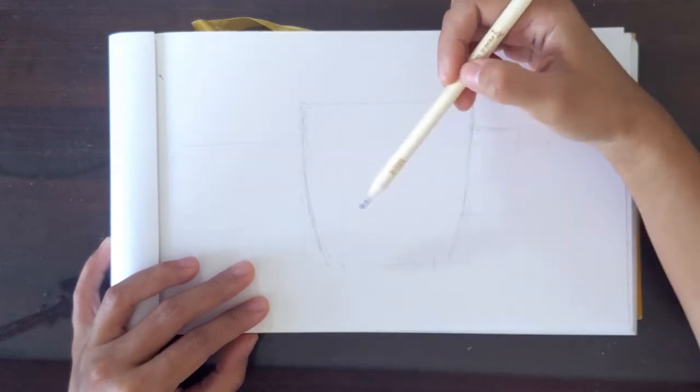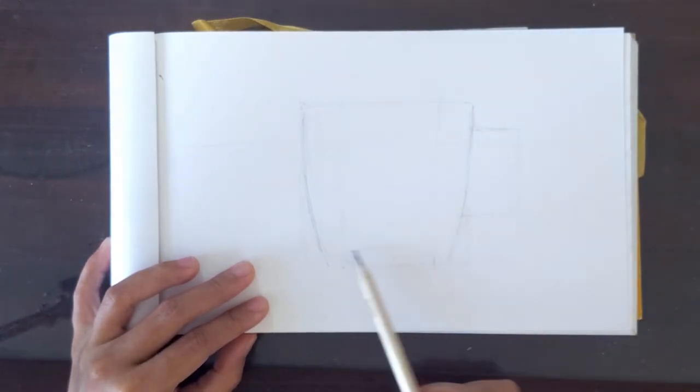After that, we will draw a small oblong at the bottom of the cup. This will be the base of the cup.